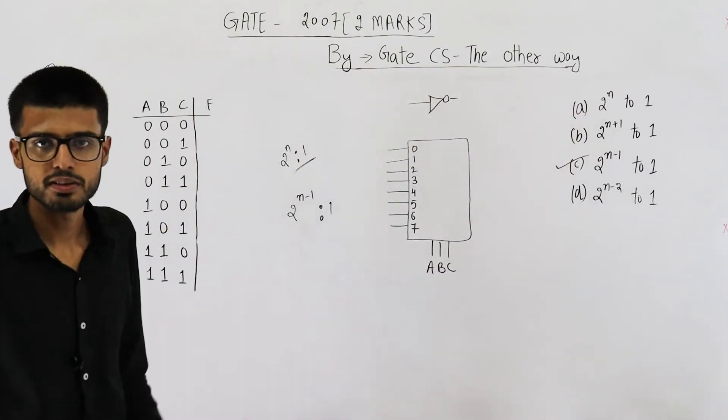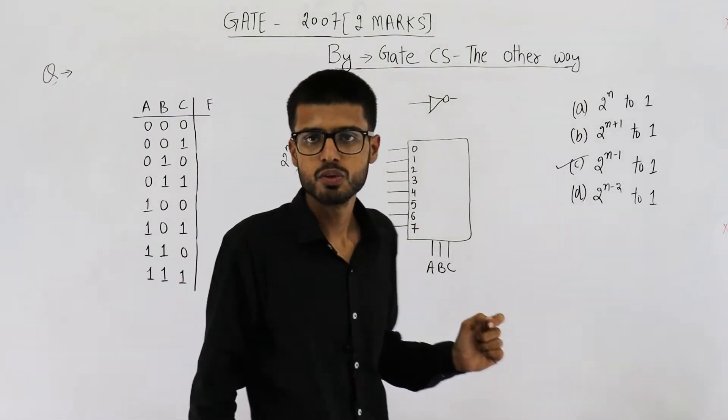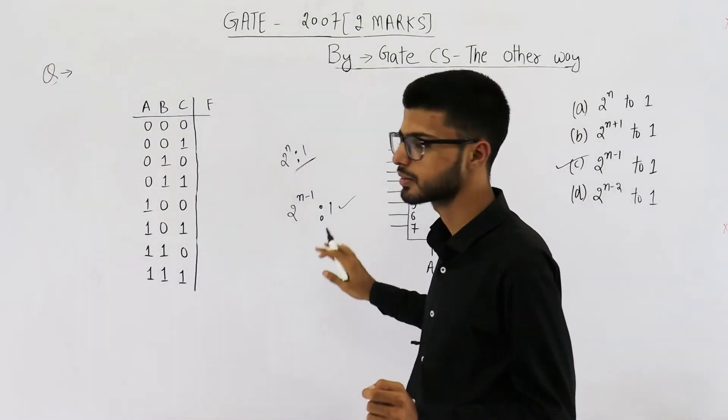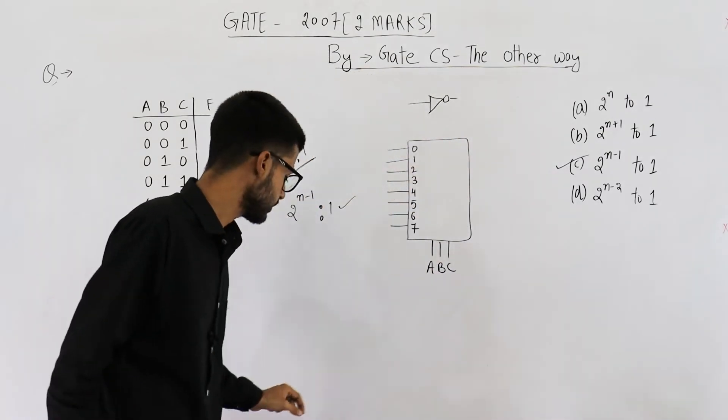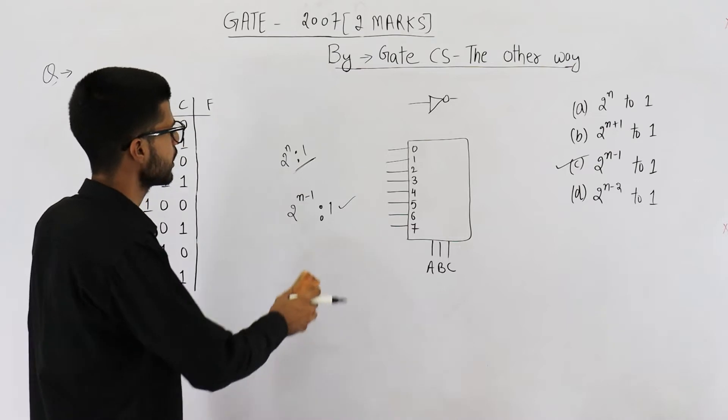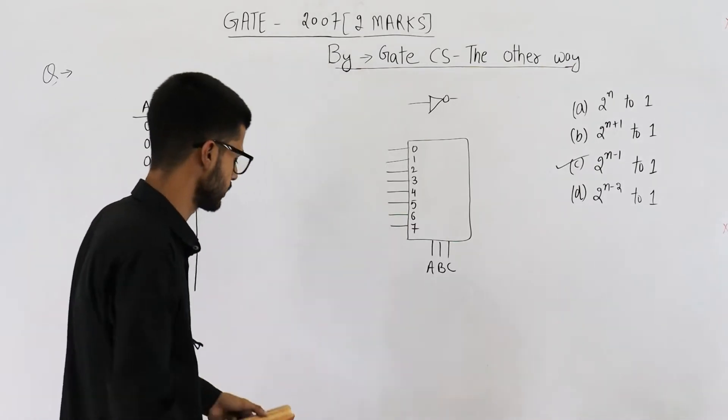Now, if you have solved one or two such questions of implementing a n variable boolean function using two power n minus one mux, then you know how these things works. But if you haven't, then I'll show you. Even though most of you can just do it by yourself, still I'll show it.